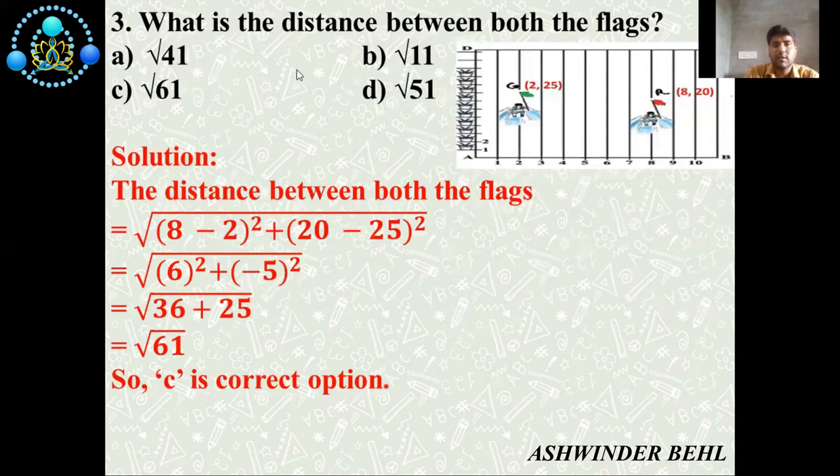Third question: what is the distance between both flags? There are four options: √41, √11, √61, √51. As we know, the distance between both flags is √[(8-2)² + (20-25)²]. 8 minus 2 is 6 squared, and -5 squared. 6 squared is 36 and 5 squared is 25. So 36 plus 25 equals √61. C is the correct option.